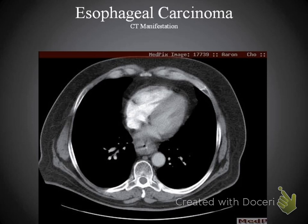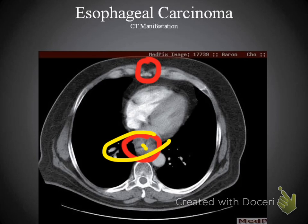Here's another example. Notice that we have the sternum here and here is the esophagus, so retrosternal pain could possibly be present in this patient. We see that the wall is very thick and the lumen is very narrow, so this patient does have esophageal carcinoma as well — maybe a slight degree of enhancement here. Pain and difficulty swallowing are some of the classic symptoms for this patient.